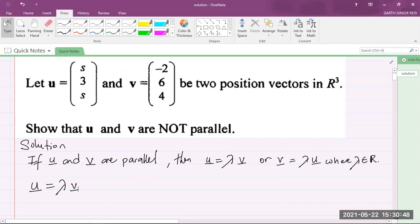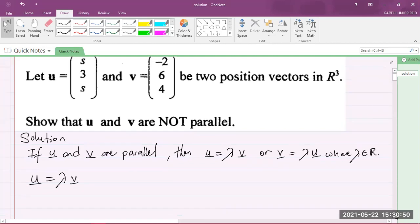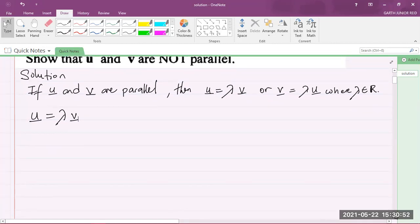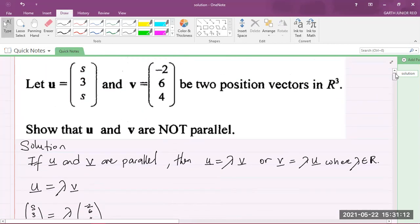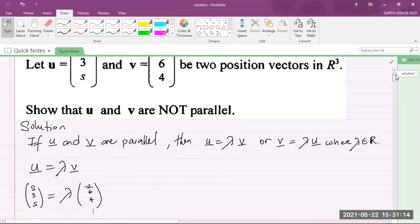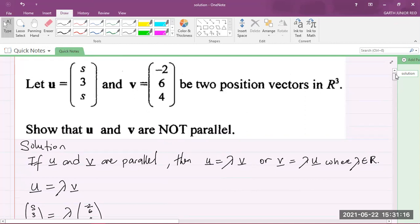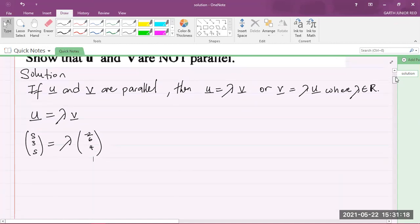Now, I know the vector U and the vector V. So let's plug in that down here. I know that the vector U is S, 3, S, and that is equal to a constant lambda multiplied by the vector V as negative 2, 6, 4.